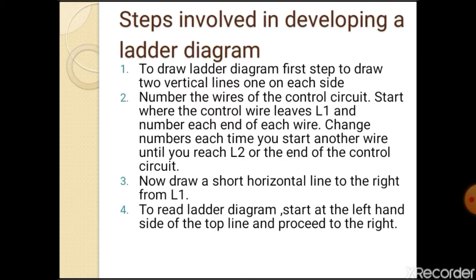Steps involved in developing a ladder diagram. To draw ladder diagram, first step: draw two vertical lines, one on each side. Second, number the wires of the control circuit. Start where the control wire leaves L1 and number each end of each wire. Change numbers each time you start another wire until you reach L2 or the end of the control circuit. Third, now draw a short horizontal line to the right from L1. Fourth, to read ladder diagram start at left hand side of the top line and proceed to the right.